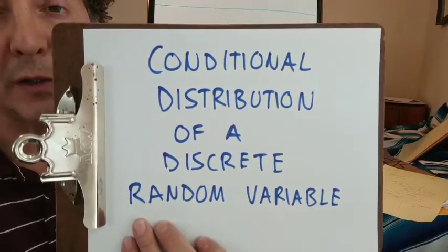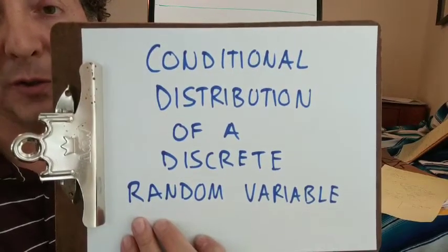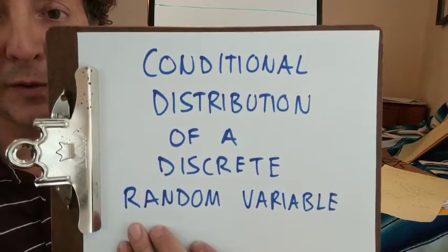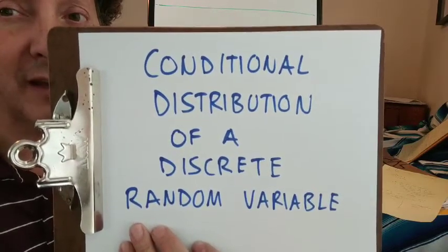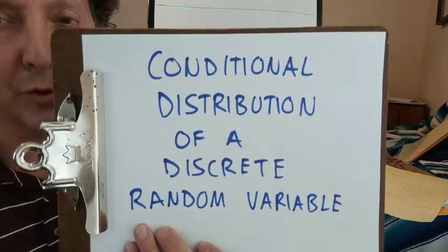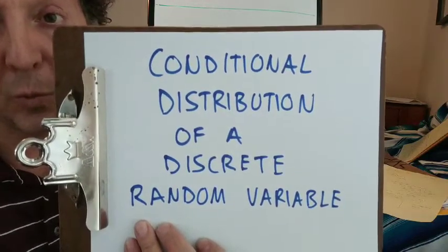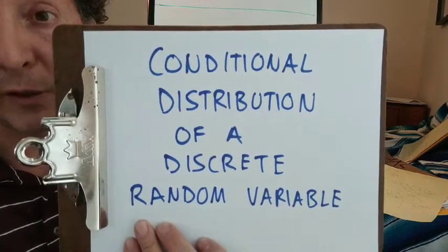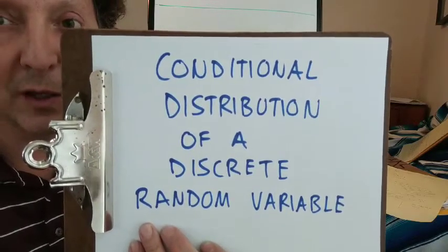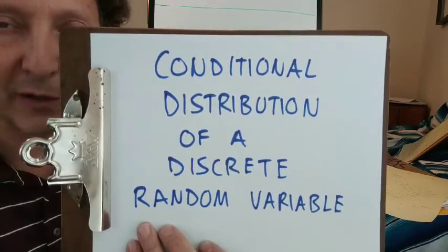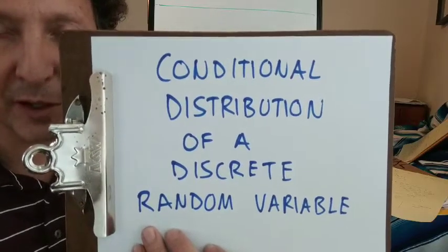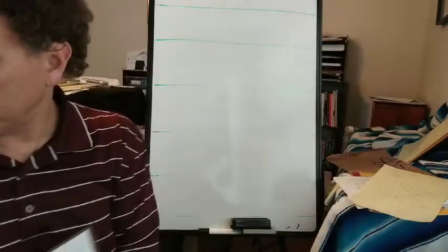If x and y are jointly distributed discrete random variables, and we just want to predict x, there are sort of two ways we could do it. We could do it if we're given information about y, and we could do it also if we're not given any information about y. Let's compare and contrast those two different possibilities.